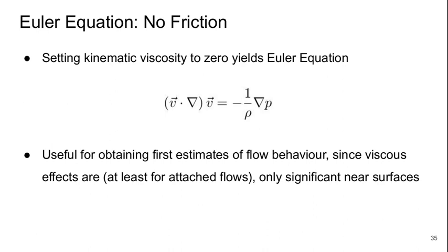Now, if we set the kinematic viscosity to zero, we get something simpler called the Euler equation. So this is basically the momentum equation governing the behavior of the fluid if there's no friction. This is very useful for obtaining first estimates of flow behavior since viscous effects, at least for attached flows, tend to only be significant very close to the surfaces.